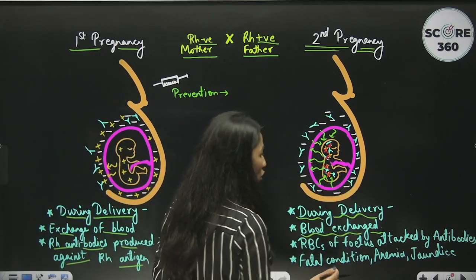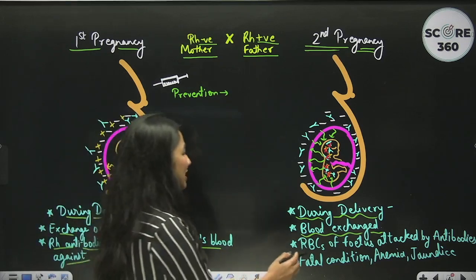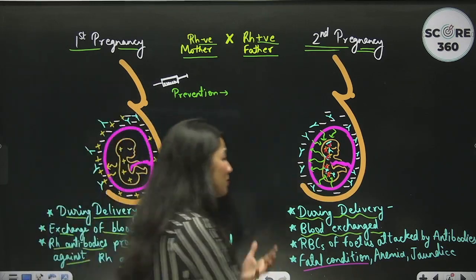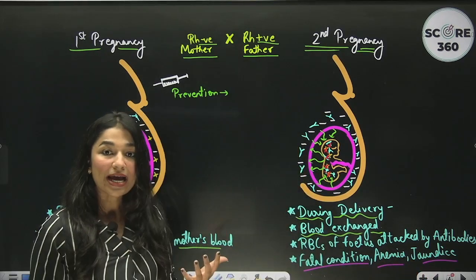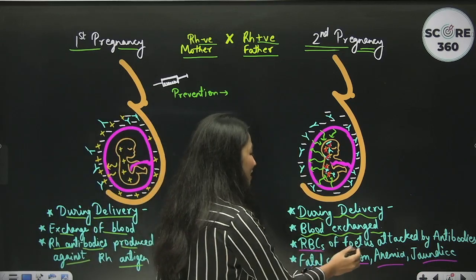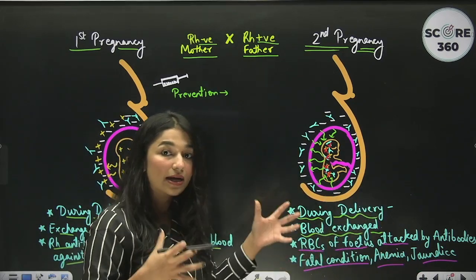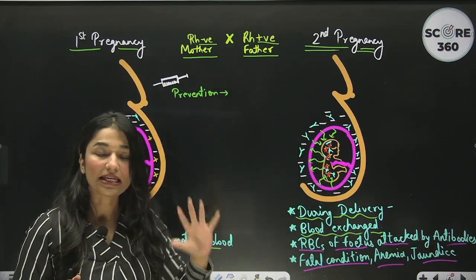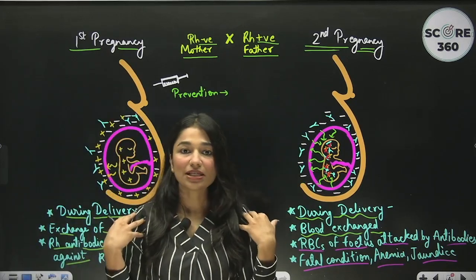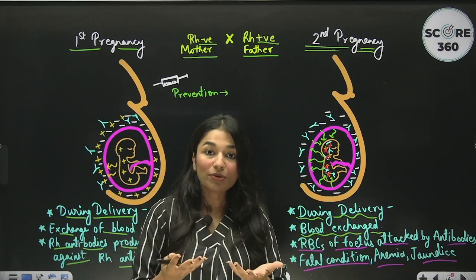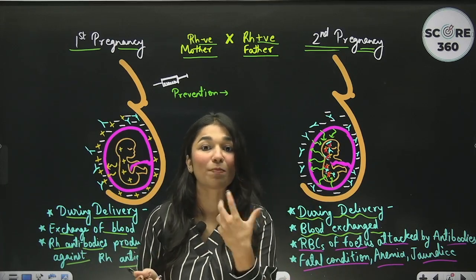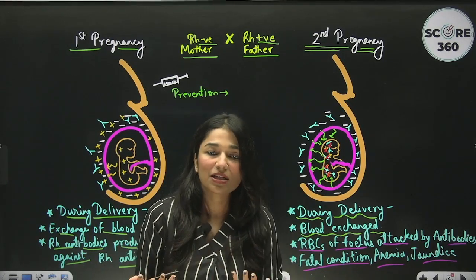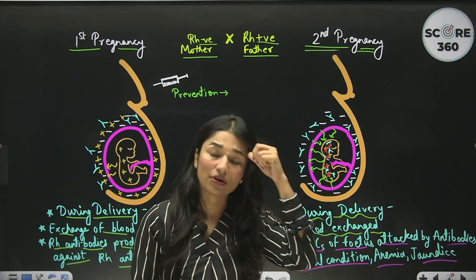This severe condition is called erythroblastosis fetalis. It can be fatal — the death of the fetus is possible — or it can cause severe anemia and jaundice. All of this happens because the fetus's RBCs are being attacked by the antibodies formed in the mother's body. The name comes from the fact that as the fetus's RBCs are destroyed, the fetal bone marrow rapidly produces immature red blood cell precursors called erythroblasts. Because these cells are immature, they cannot function properly.